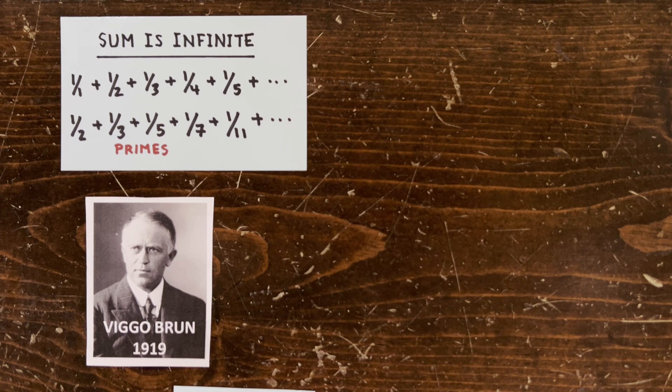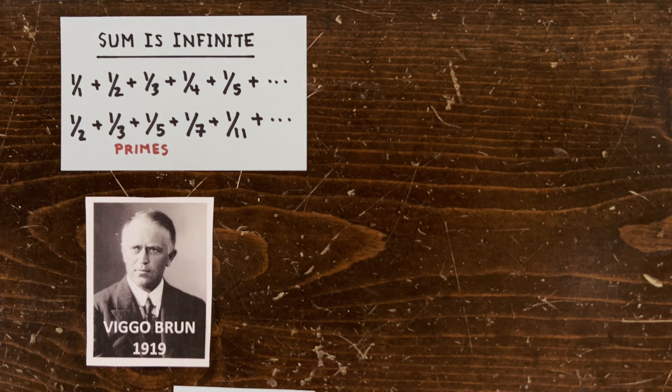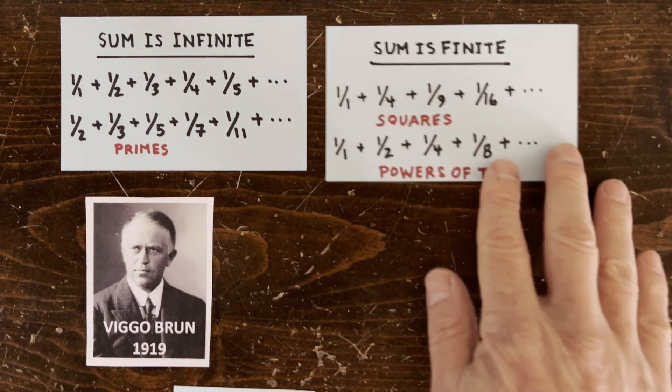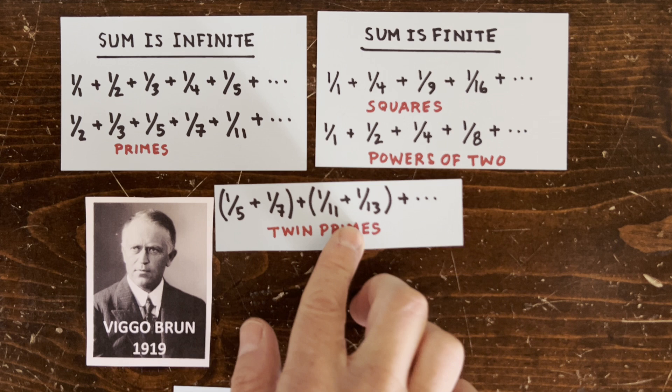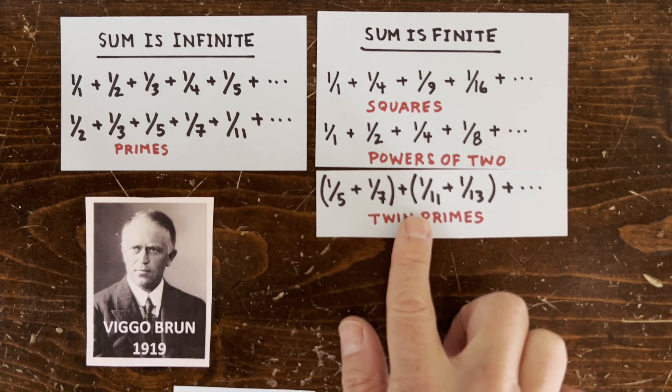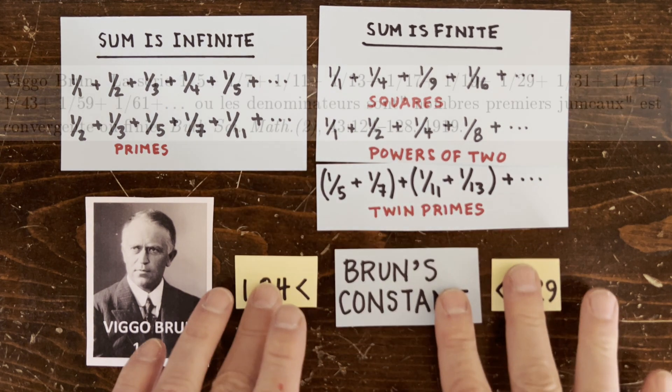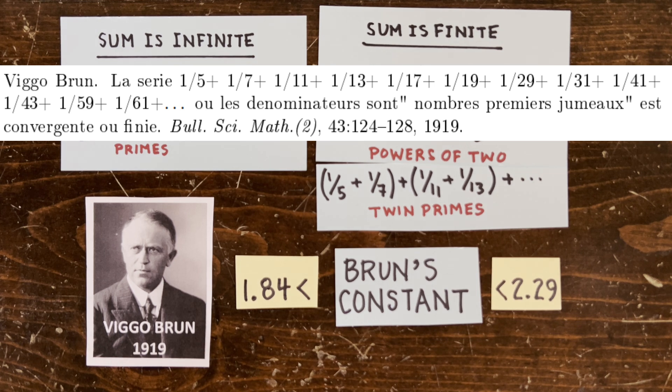Same for primes. But for numbers that are more rare, like squares and powers of 2, the reciprocals converge. And Brun proved that the twin primes are sieved out so quickly that their reciprocals fall on this side of the fence. So he wrote this paper with a title that even a math kook can appreciate.